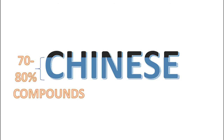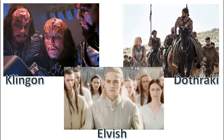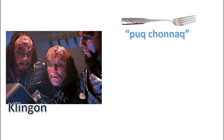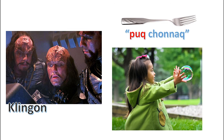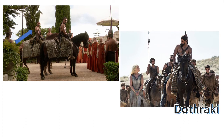The same is true of Japanese. Even constructed fictional languages, such as Klingon from the TV series Star Trek, Elvish from Lord of the Rings, and Dothraki from Game of Thrones, include compound words. In Klingon, the word for fork is pak-chonak, pak meaning child and chonak meaning hunting spear. In Dothraki, the word for a blood rider, or someone who has pledged his life in service of his call, is dothrakoi — dothrak meaning rider and koi meaning blood.